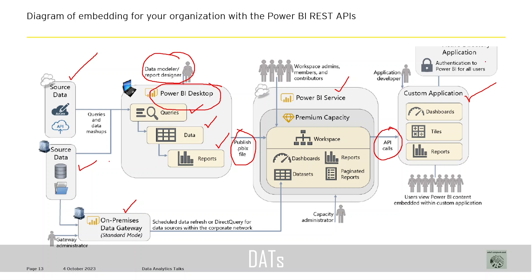Each user will also need a Power BI Pro license. Regarding authentication and authorization: when embedding content in an organizational scenario utilizing Power BI Premium, every user is authenticated to Power BI to view data embedded in the custom application. Authentication to Azure Active Directory is based on the user's individual AAD account. This allows the embedded content to leverage the same row-level security configured for your analysts and report consumers in Power BI — so RLS is applied for every user.